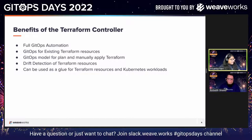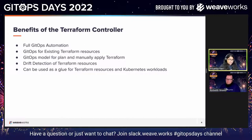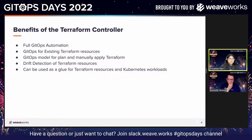The benefits are really — and I heard a lot about this at KubeCon in person — a lot of people were really excited about this controller. This is something that's really been asked for a lot, with lots of community excitement. There is full GitOps automation using the Terraform controller. You can use it to GitOps your existing Terraform resources, take advantage of the GitOps model for planning and manually applying Terraform, and there's drift detection for Terraform resources. It's basically used as the glue for Terraform resources and Kubernetes workloads.